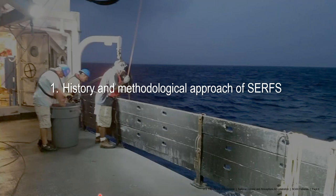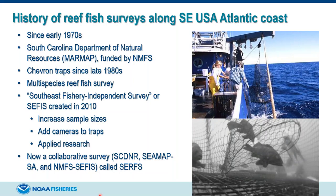A bit about the history and methodological approach of the Southeast Reef Fish Survey. Beginning around 1972, the National Marine Fisheries Service began funding South Carolina Department of Natural Resources to conduct research and monitoring of reef fish species along the Southeast Atlantic coast. They used a variety of gears over time, but starting in the late 1980s they began using chevron traps — big arrowhead-shaped baited traps that fish swim into but can't find their way back out. This became the central gear used in a comprehensive way starting in 1990.